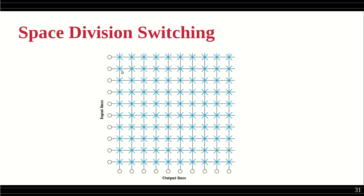Taking this example: the sender is connected to row one and the receiver is connected to column three. All the cross points in that third vertical line have to be closed to establish communication between this particular sender and receiver. That is the kind of configuration we have.